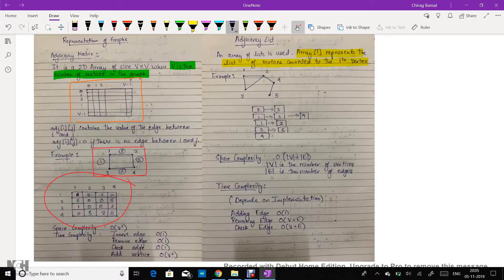Here consider this graph. Here we have this adjacency list. This represents the vertices connected to node 1. This represents the vertices connected to node 2.